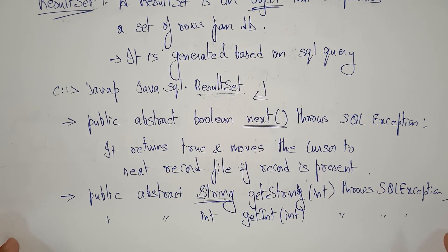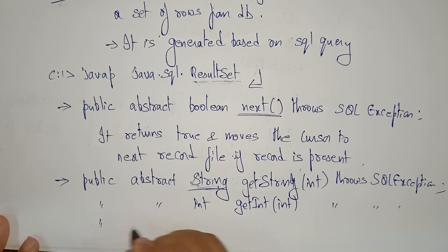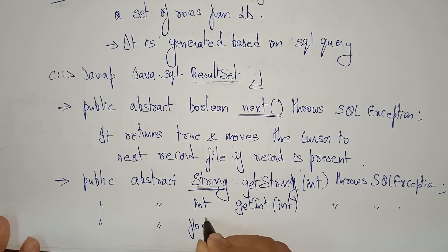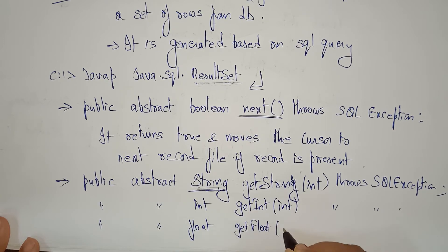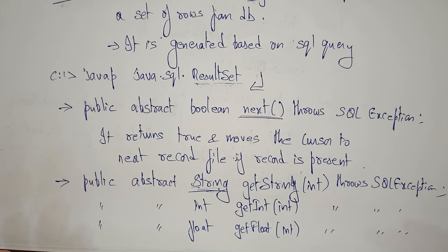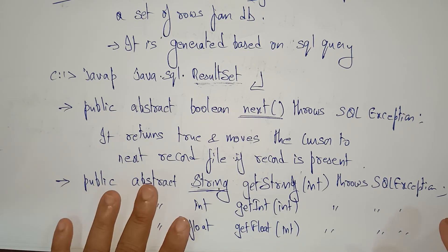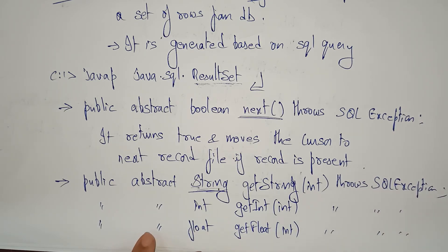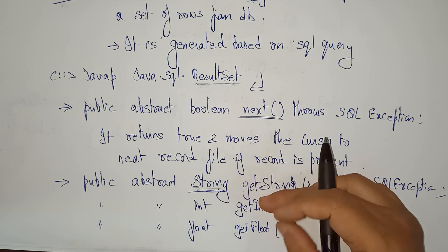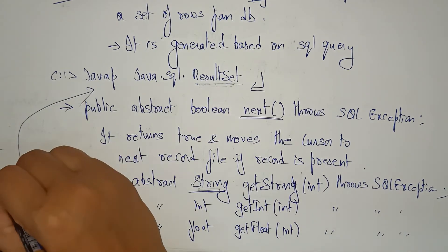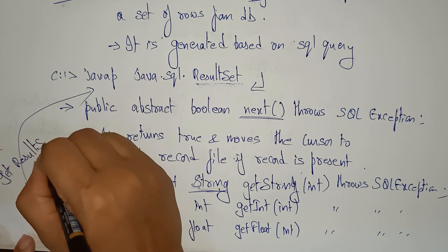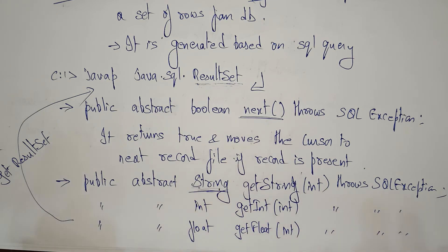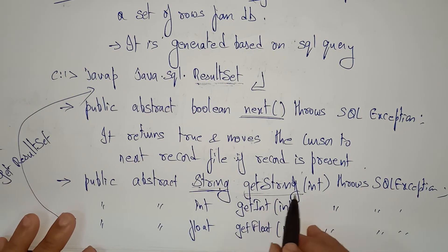If you want to get integer data like ID or phone number, the return type is int — you call getInt(). If you want to retrieve float data like salary or average, you call getFloat(). These three methods — getString(), getInt(), getFloat() — are used to get data from the ResultSet.